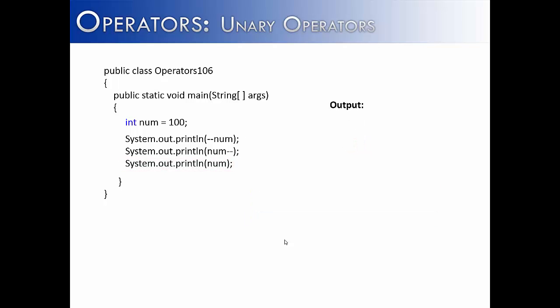Let's see this with pre and postfix decrement instead of increment. So we're going to start with 100 again. If we use a prefix operator, --num, we're going to get 100 minus 1, which is 99.